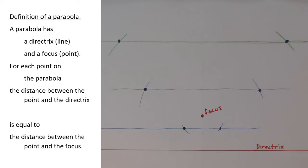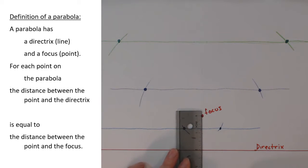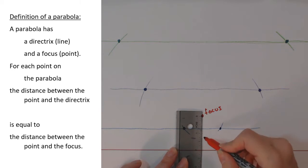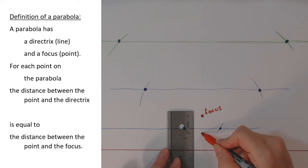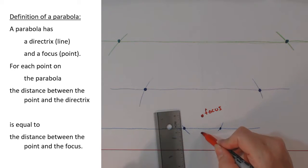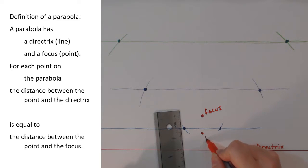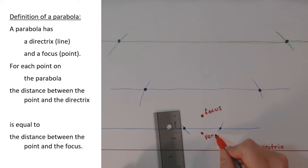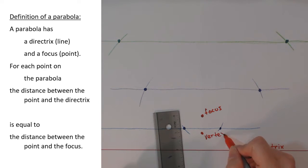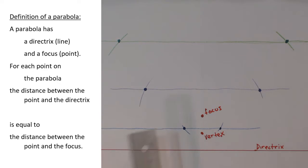Now I'm going to measure the distance between the focus and the directrix — it turns out to be two inches — and find a point exactly in the middle: one inch from the directrix, one inch from the focus. This point is called the vertex of the parabola.